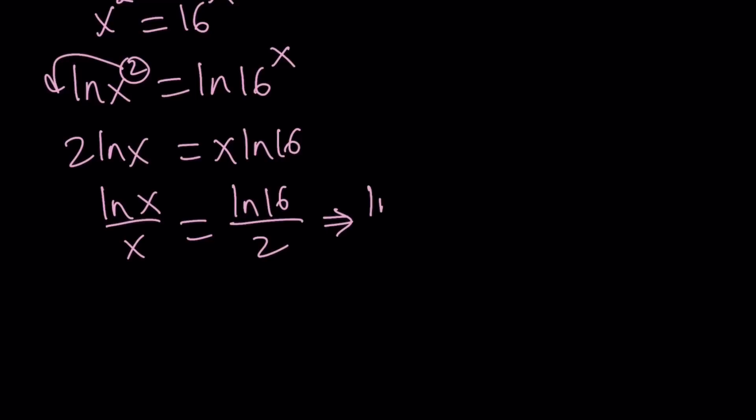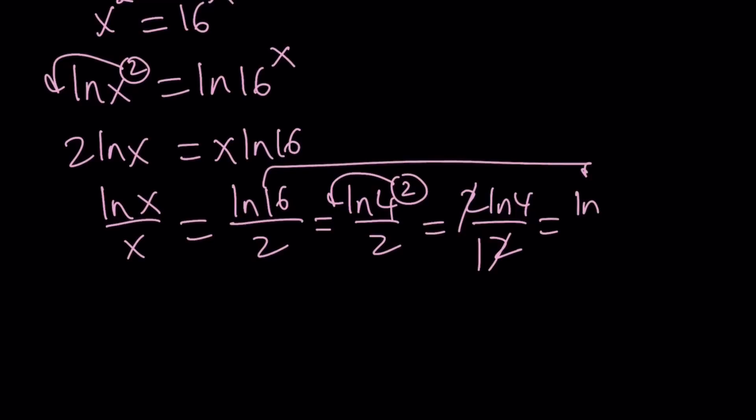For example, ln 16 can be written as ln 4 squared over 2. I can move the 2 to the front. That's going to give me 2 ln 4 over 2. The 2 cancels out. That leaves a 1 at the bottom, but x can't be 1, obviously. That's not going to work. Or, I can write ln 16 as ln 2 to the fourth power divided by 2, and move the 4 to the front. That gives me 4 ln 2 divided by 2.